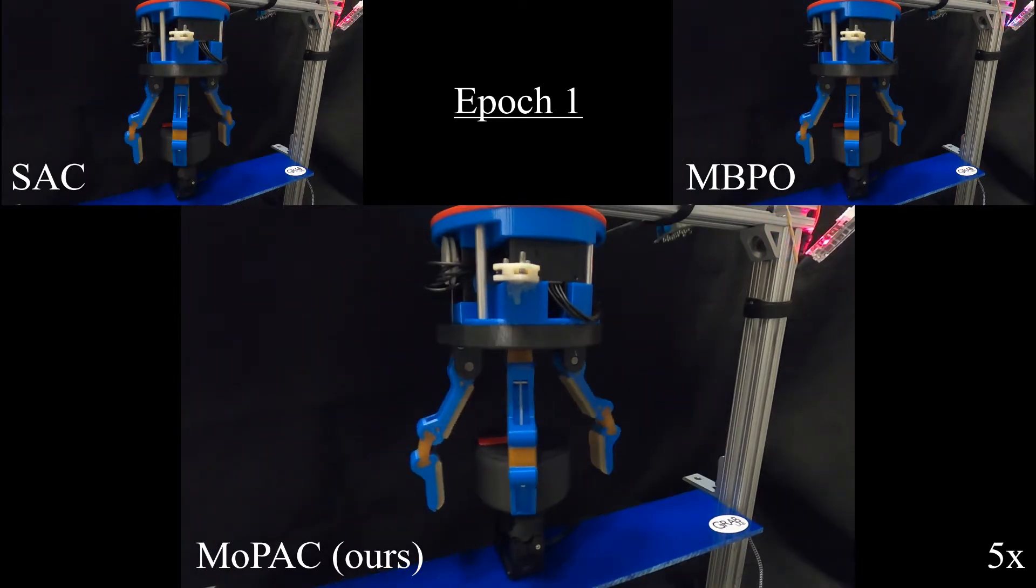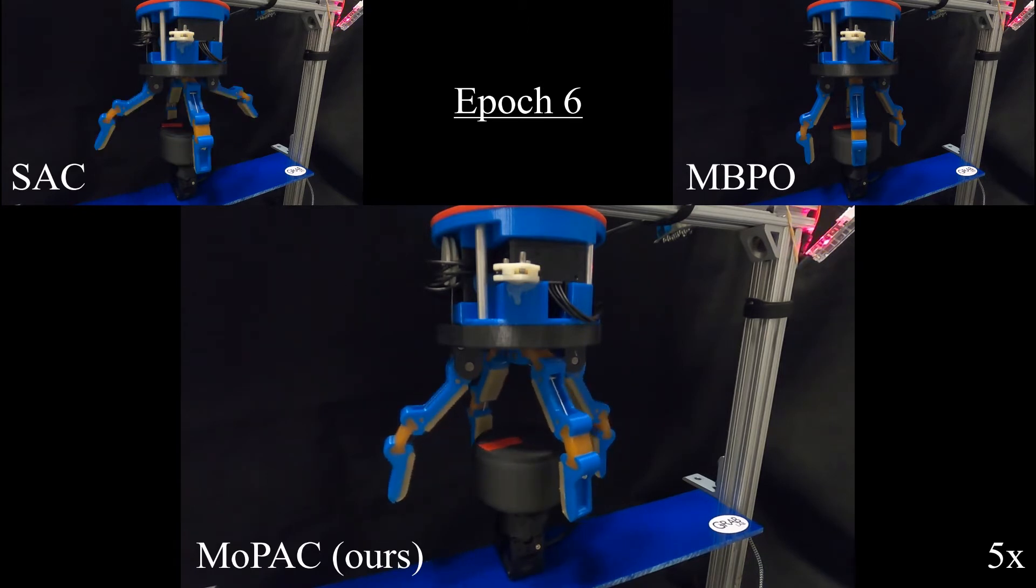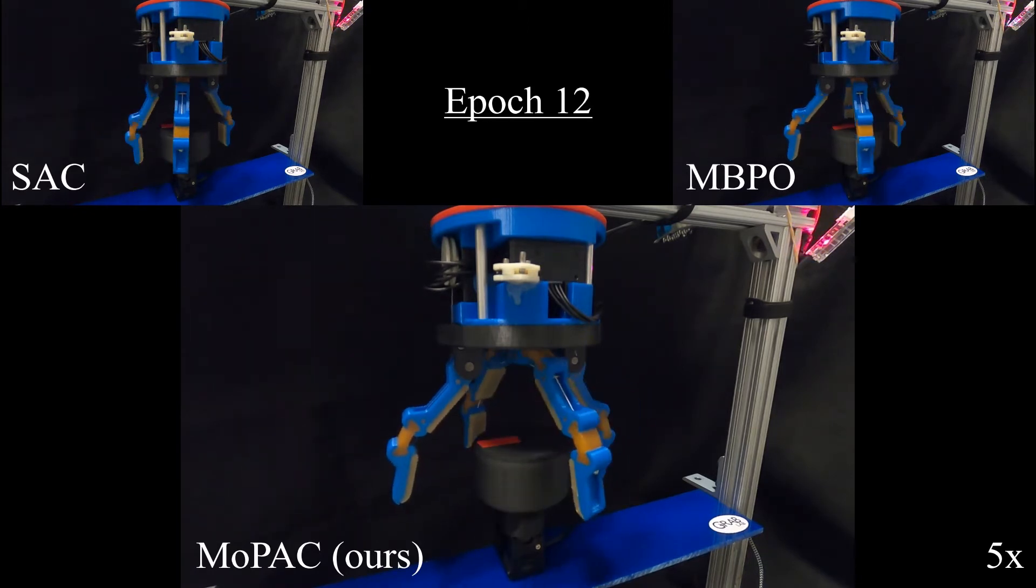We designed an additional valve for evaluation, the round valve, that resembles the geometry of a doorknob. This task is inherently harder than the previously presented pentavalve, as the fingers must also grasp the valve in order to rotate.